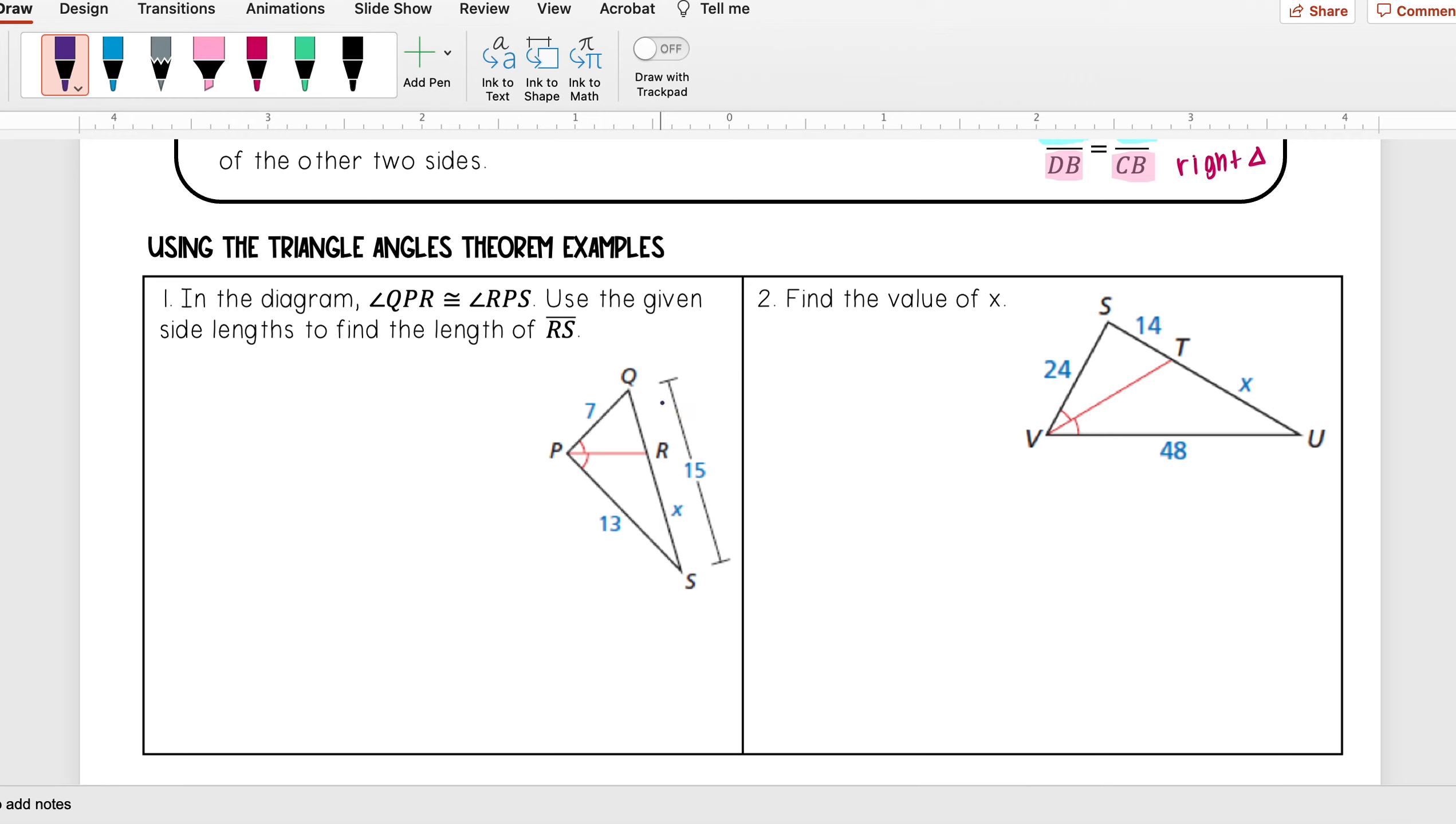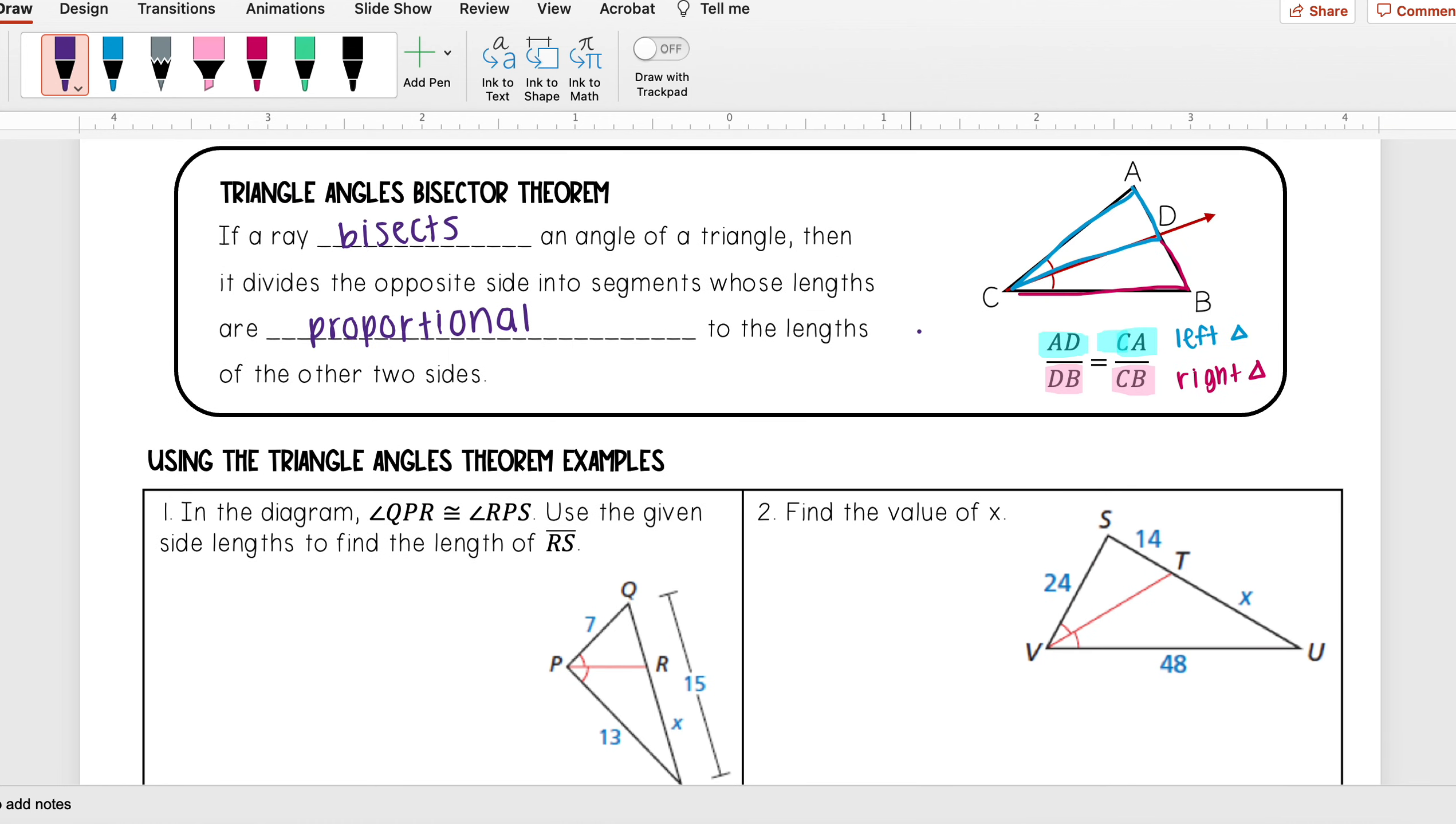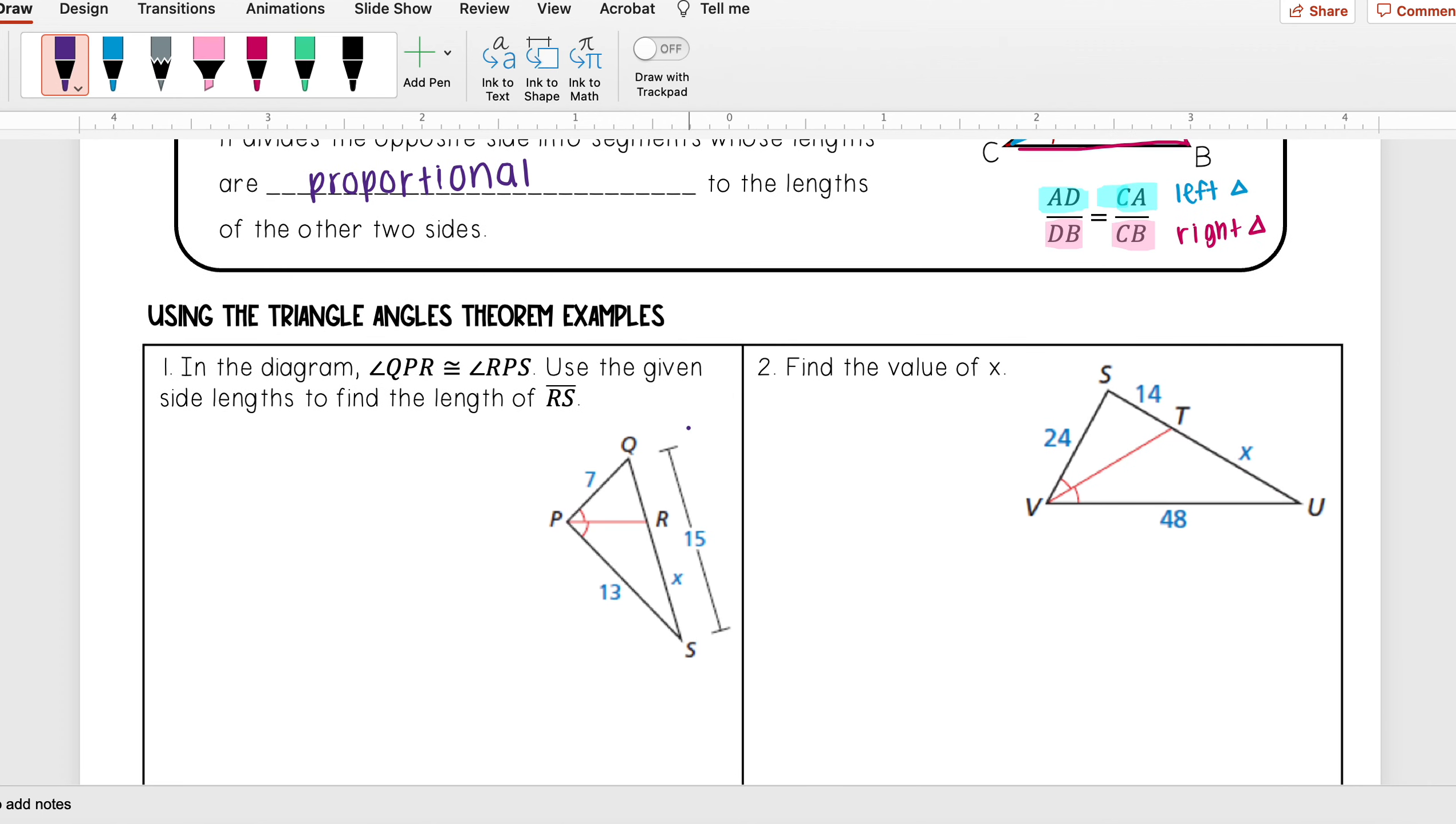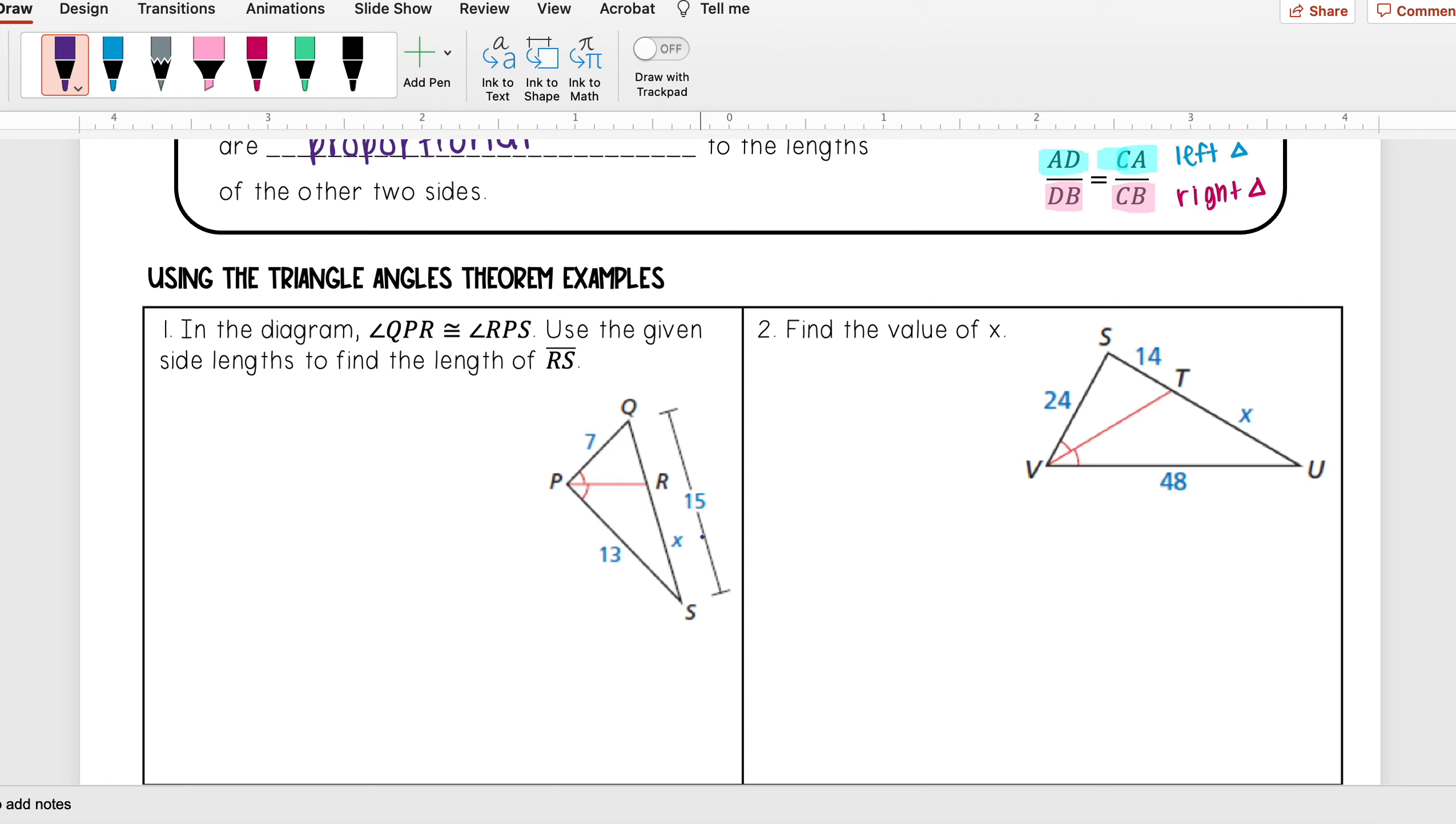So here we see something a little bit different. I see that RS is x, and instead of giving us a length of QR like we need, it tells us that the whole side is 15. So thinking about it, if RS is x and the whole thing is 15, that would mean that the length of QR is 15 minus x.